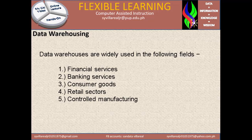Data warehouses are widely used in the following fields: 1. Financial Services, 2. Banking Services, 3. Consumer Goods, 4. Retail Sectors, 5. Controlled Manufacturing. These fields are crucial because almost every person has a financial status, a banking status, consumes goods, shops retail, and manufacturers need to summarize, update, and identify how many products they have and how many are sold.